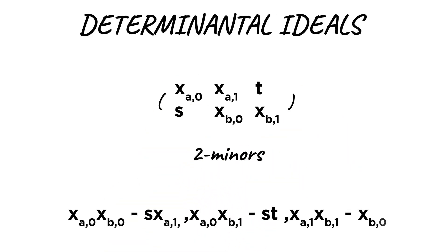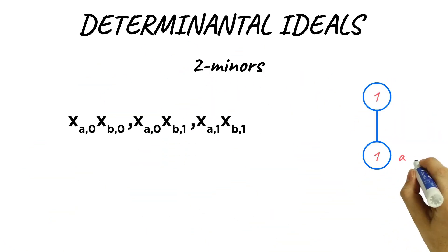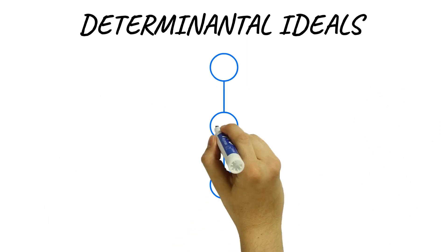Taking the two minors of the matrix, the leading terms give the letterplace ideal. For ladders P, we get new classes of ideals of maximal minors.